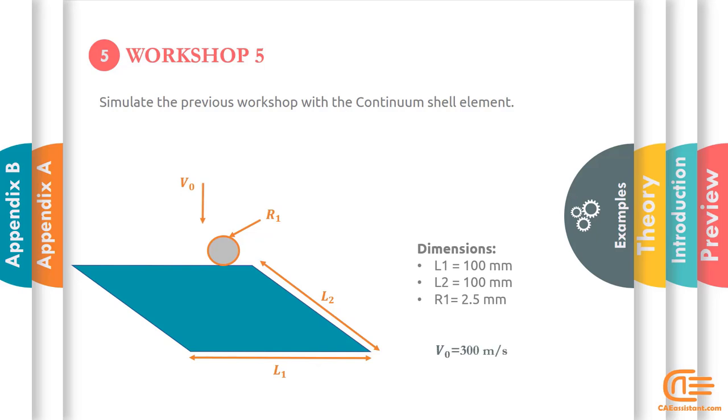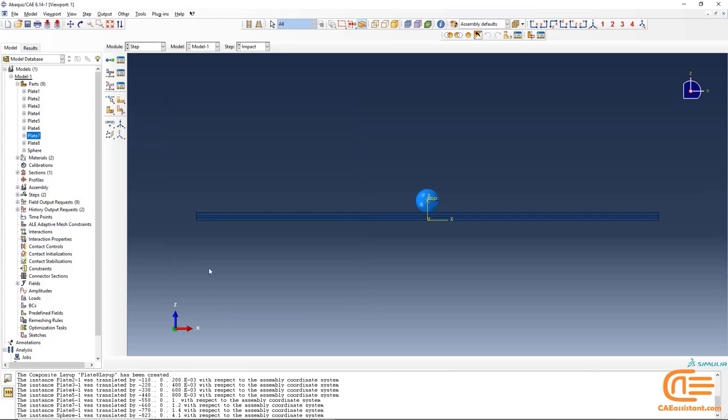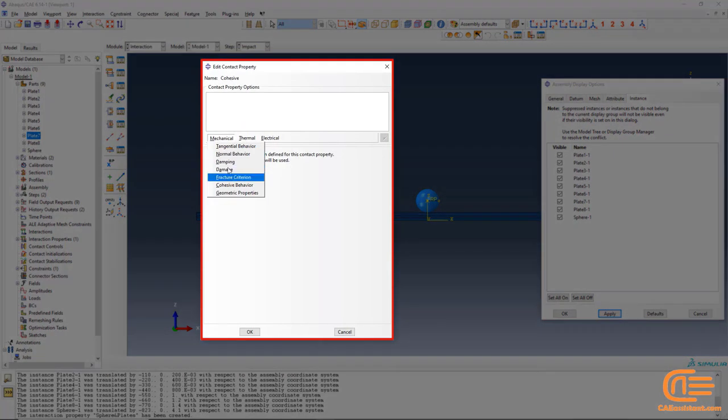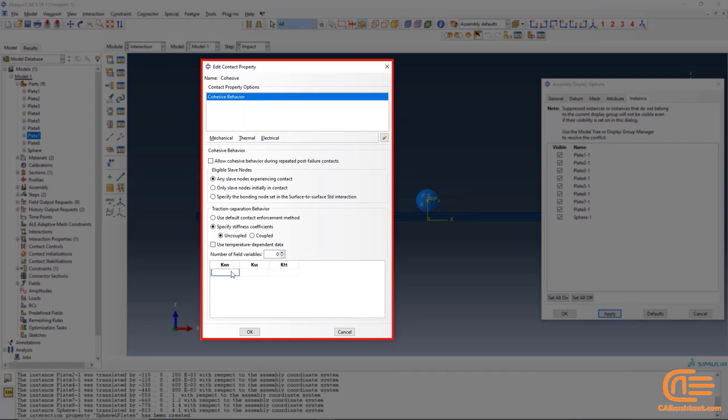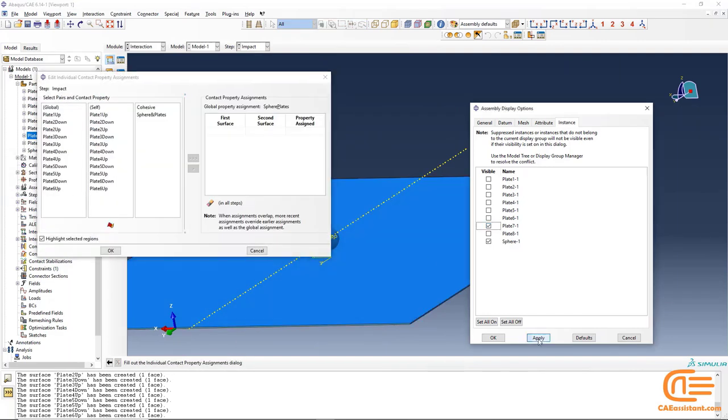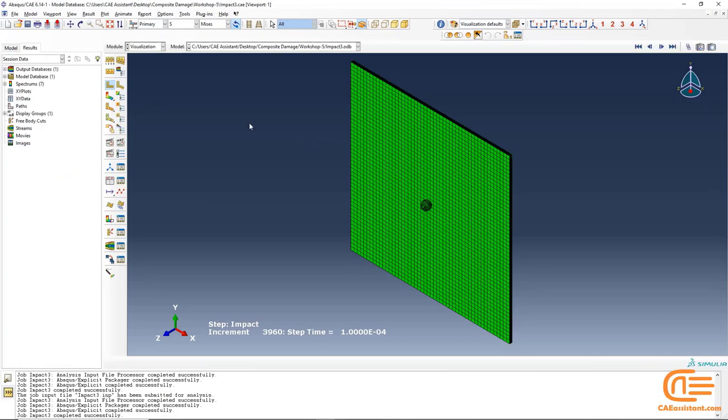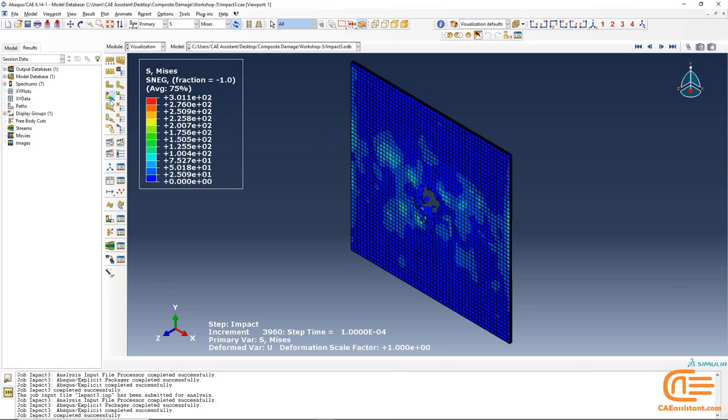This time we want to develop the previous model and use shell continuum element to simulate the cohesive properties between layers and also see the effect of the delamination in the result. Property I create cohesive type property and in the cohesive menu behavior I insert the stiffness of adhesive which are elastic modules of the elasticity. The results are as you see.